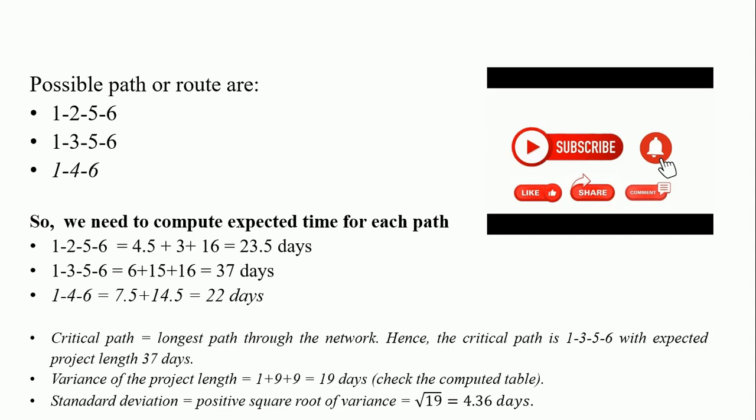So to know the variance of the project length you need to trace 1-3-5-6, look at the activities that fall on 1-3-5-6 and add their variance from your computation. If you do that you are going to get 19. And don't forget standard deviation equals square root of variance, the positive square root of variance. Square root of 19 gives 4.36 days which is approximately 4 days and some hours.